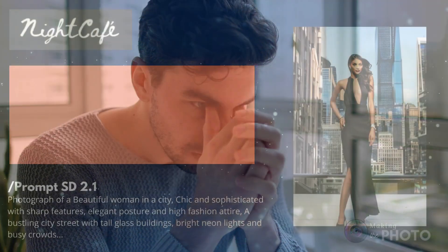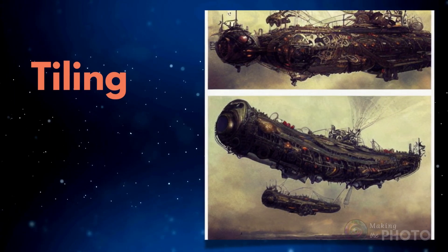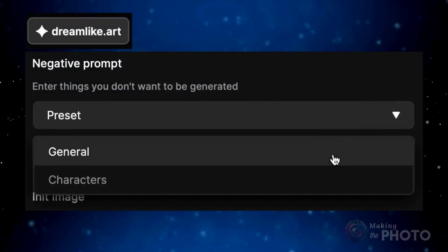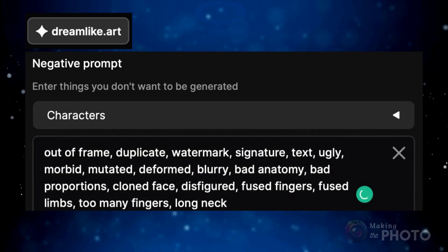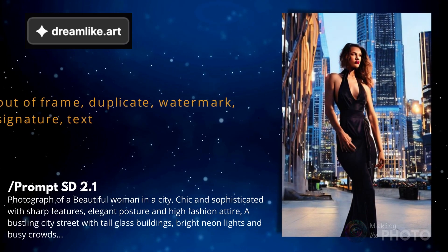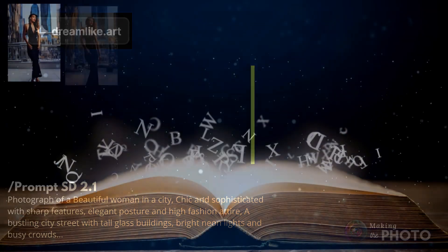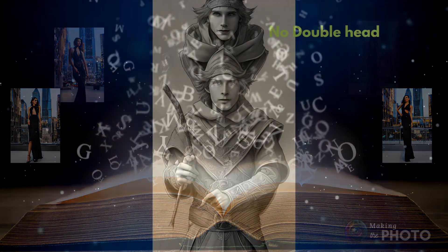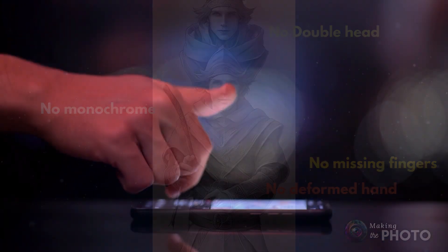Night Cafe suggests using a specific negative prompt. Tiling is when you have an image divided into sections. Dreamlike AI suggests a general negative prompt and one specifically designed for characters — feel free to use these prompts in your own images. None of these generic prompts hit it out of the park on my example image; I still have distortions. There's not one magical negative prompt that fixes all Stable Diffusion distortions — it's probably better to use negative prompts specific to your image.